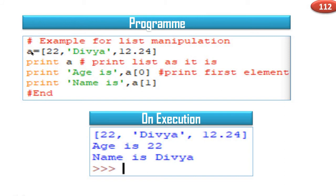List a is assigned the values 22, divya, 12.24. Print a will print the list as it is.